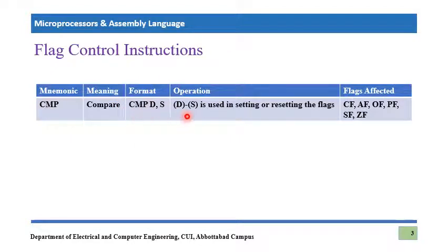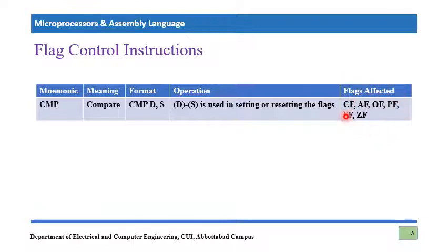At the back end, what happens is the microprocessor — whether 8086 or 8088 — subtracts the source operand from the destination operand. This subtraction affects a number of flags, and those flags represent the decision of which operand is larger and which is smaller.